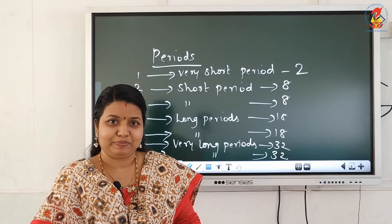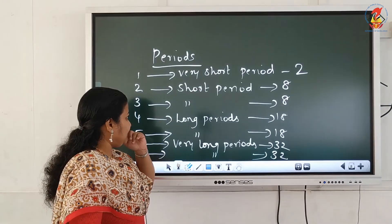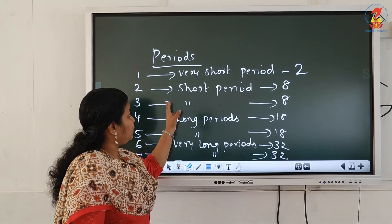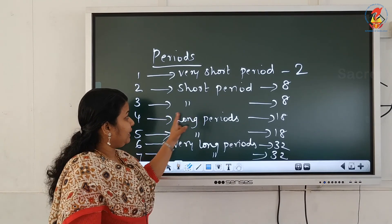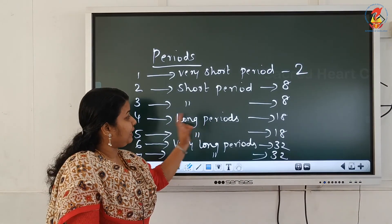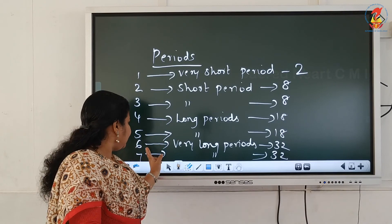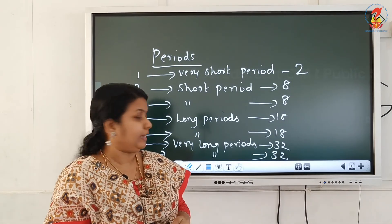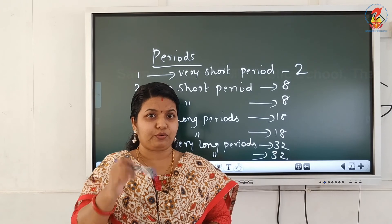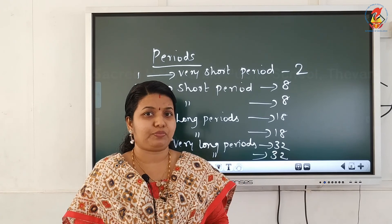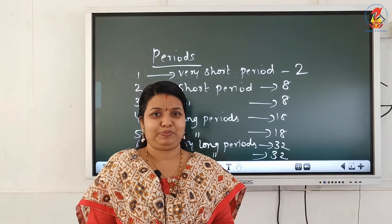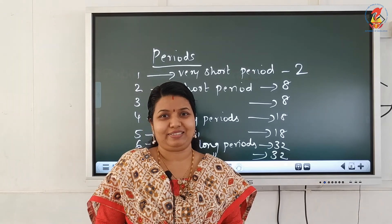These are the number of elements in each period: 1st period has 2 elements; 2nd and 3rd are short periods with 8 elements each; 4th and 5th are long periods with 18 elements each; 6th and 7th are very long periods with 32 elements each, out of which 14 are detached from the main body and placed below. Thank you, children.